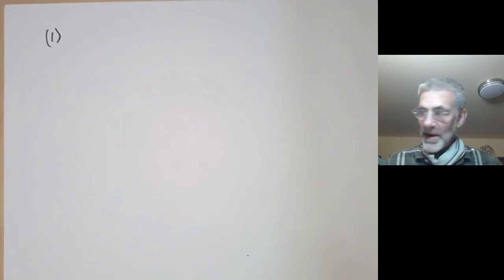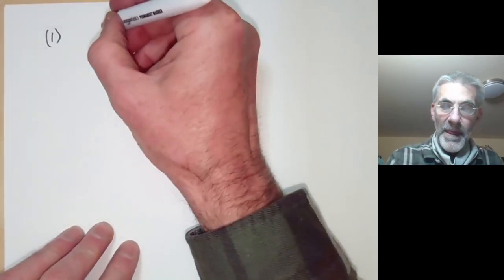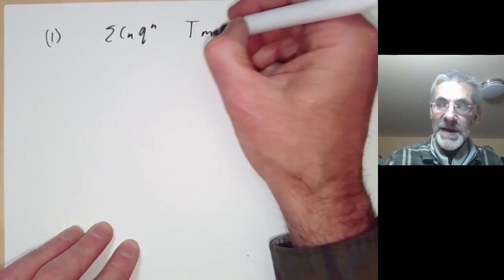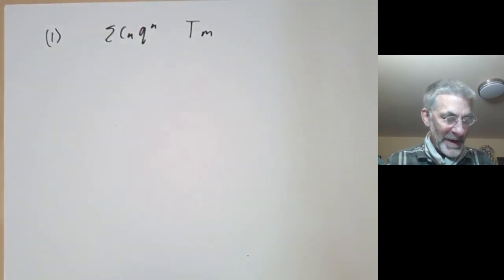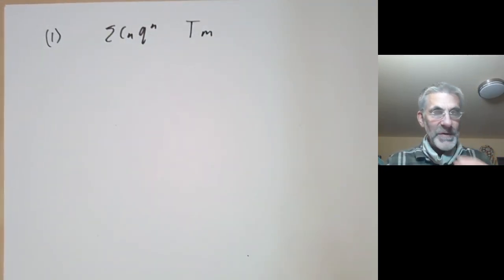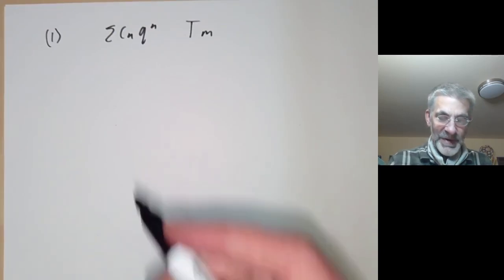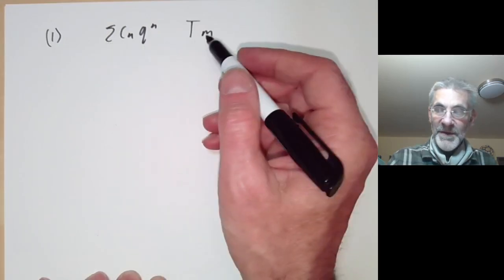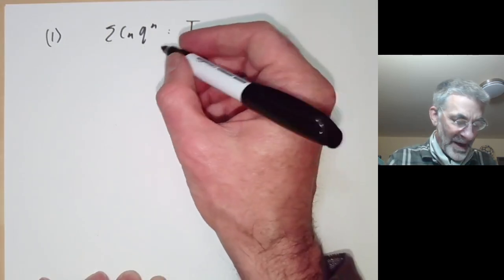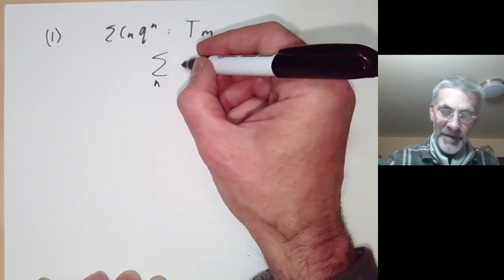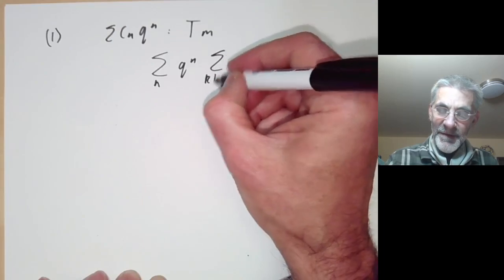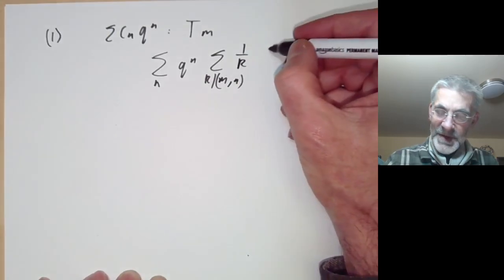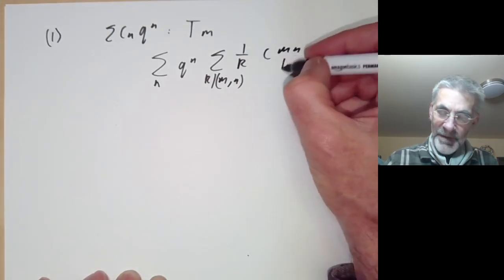The first property we need is knowing what the Hecke operator actually does. If we have a function ∑ c(n)q^n and apply the Hecke operator T_m, the formula for the coefficients is given by: ∑_n q^n · ∑_{k | gcd(m,n)} (1/k) · c(mn/k²).